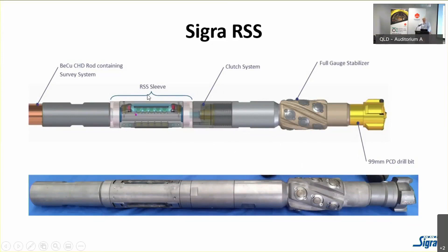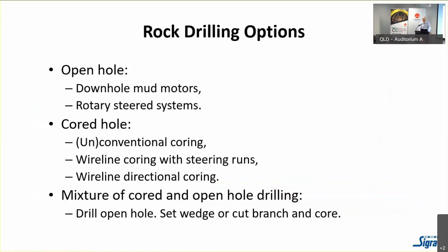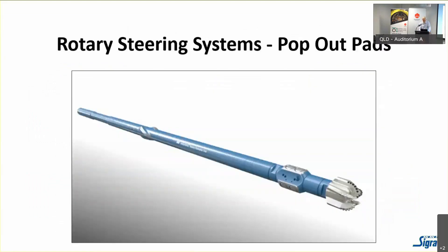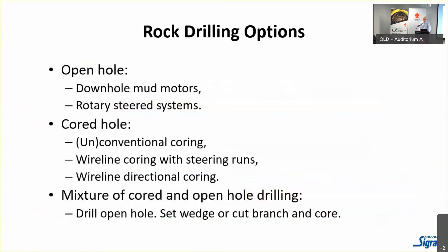The beauty of rotating the drill string, whether with pads-based or point-the-bit steering, really comes down to hydraulics. If you don't move cuttings you build up cuttings beds and can get caught in hole. For rock drilling in open hole, practically you're looking at downhole mud motors or rotary steered systems. In a cored hole you might use conventional coring, but wireline coring options tend to give very small core and take quite a long time.